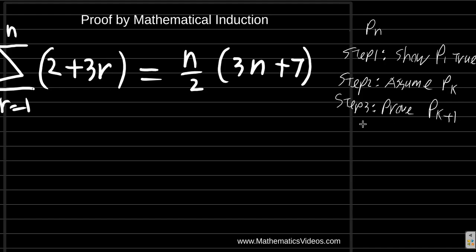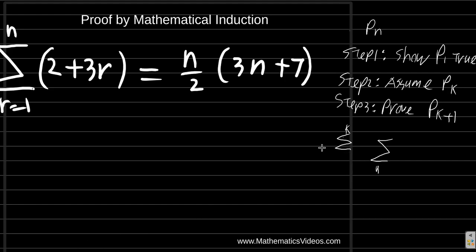And the other thing — this involves a sum, a series. So you see R equals 1 to N. Then you will be saying R equals 1 to K when you assume or show that PK is true. Then after that, you go to P(K+1): you will be summing from R equals 1 to K, then show that R equals 1 to K+1 is true.